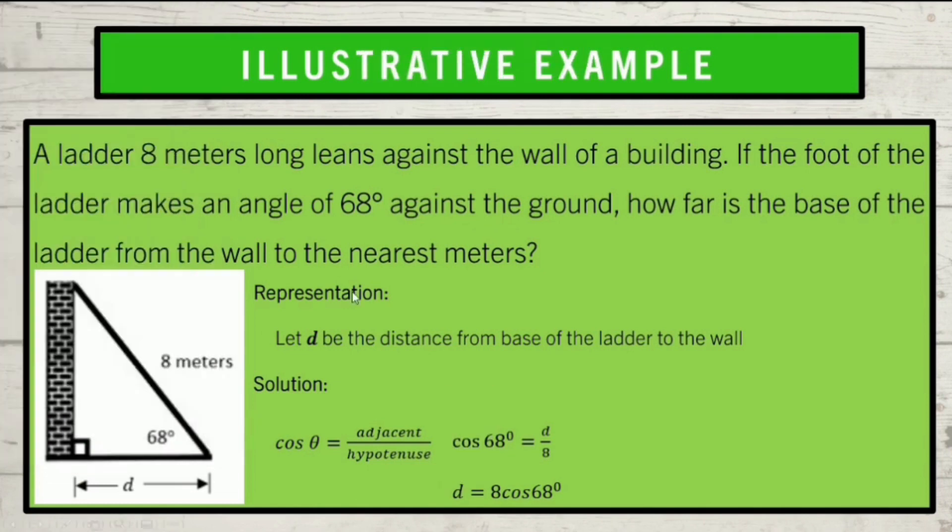Can you follow? I hope so. But we are not yet done. Let's check first our answer to be sure. Get the original equation and substitute the value of d that we find, which is 3 meters. Cosine 68 degrees is equal to 0.375, which is the same as the quotient of 3 and 8 at 0.375. Since the two sides of the equation are already equal, we are now sure of our answer. And write our conclusion, which is, therefore, the distance is approximately 3 meters. Can you follow? Very good!